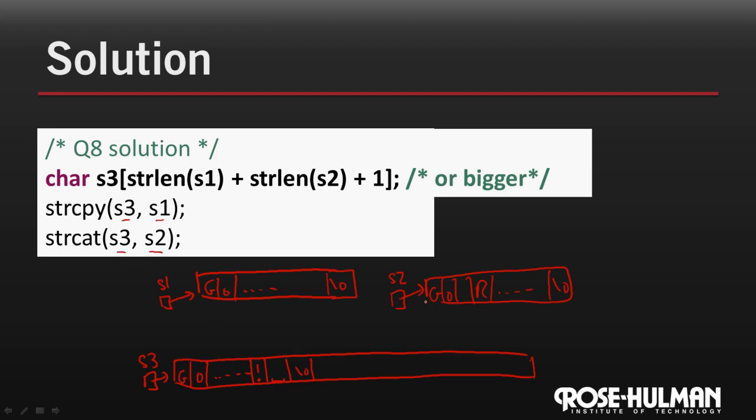Then we're concatenating s2 onto the back of s3. So what that's going to do is it's going to look in s3 for its null character, and it's going to replace it with the other string starting there. So go rose, fight, fight. And then when it's done, string concatenate will pull down the last null character as well.